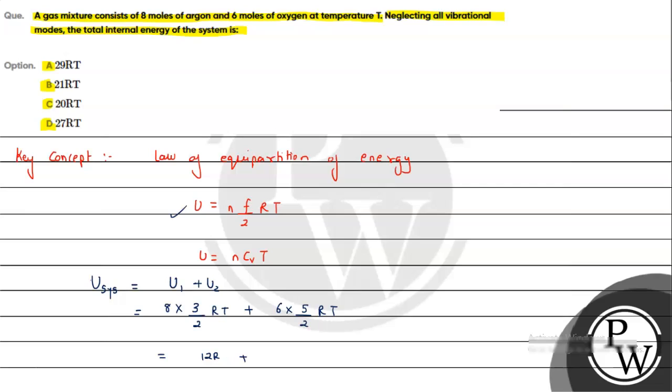Finally the answer is coming out to be 27RT. So this is the answer for the question, the total internal energy of the system is 27RT, so option D will be the correct answer. I hope you understood the solution, all the best.